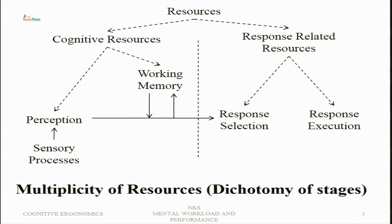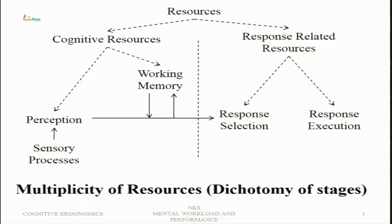The resources for these two categories — reception of information and its processing, and response selection and its execution — use different resources, and therefore there will be least or actually no interference between these two. So one can say that as far as resources are concerned there is a multiplicity; there is in fact a dichotomy of stages of information processing.